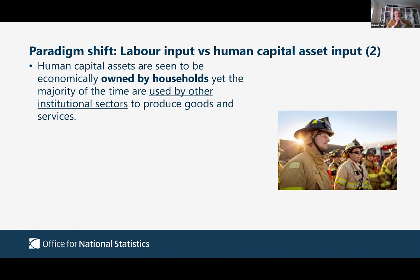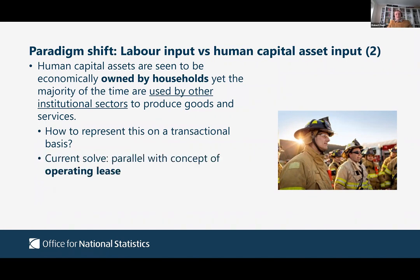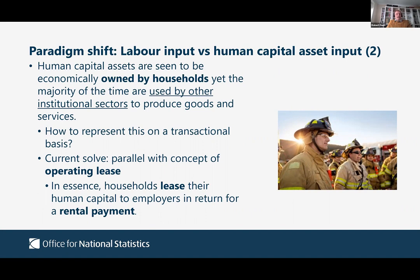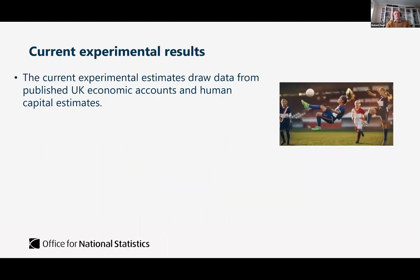If we now have a human capital asset owned by households but used for the majority of the time by other institutional sectors to produce goods and services, how do we allow that to happen within the national accounts framework and represent it on a transactional basis? The solution taken within the discussion paper is to draw a parallel with how other physical or intangible assets are handled, treating it as an operating lease. In essence, households lease their human capital to employers in return for a rental payment. That ends the conceptual points of setting up how human capital can be integrated into the economic account system.